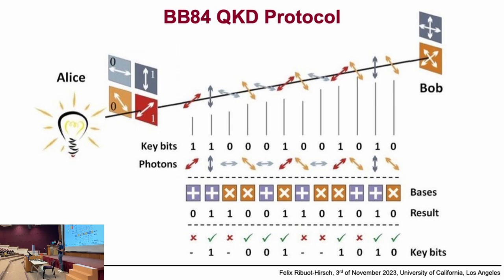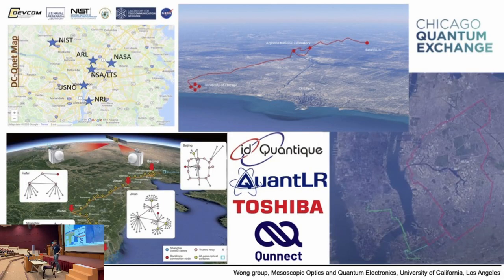This is quantum key distribution. It's a way to notice that someone is listening to us. It relies on the fact that measurement destroys the quantum state. This was theory — I hope you've followed. Now we're going to see the implementation. So everybody's trying to do quantum key distribution. It's simple: you send photons one by one. You need a laser and you send photons with this protocol through optical fiber.